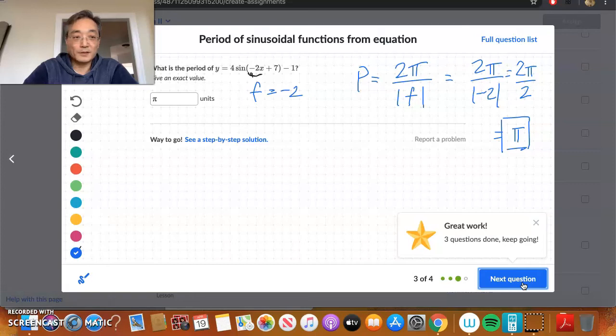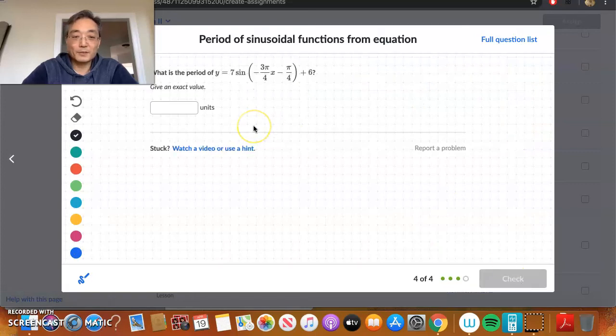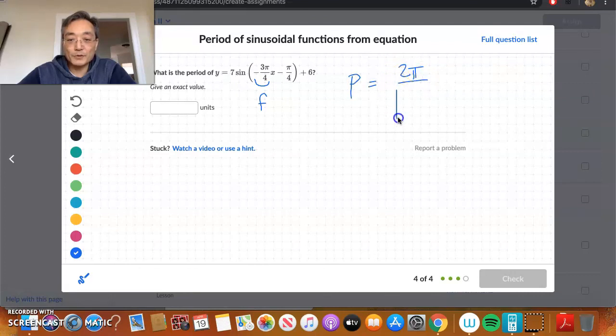And then, last but not least, our final example. We have 7 sine of negative 3 pi over 4x minus pi over 4 plus 6. Again, identify. Identify the coefficient of x, which is right in here. That's our f. That's our frequency.